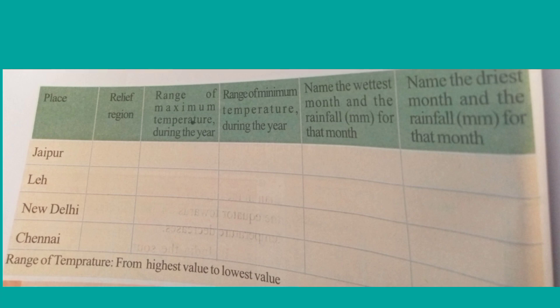Chennai is located on the east coast near the Bay of Bengal. Desert climate influences the climate of Jaipur, while winds from the sea influence the climate of Chennai. One table in the textbook covers the cities Jaipur, Leh, New Delhi, and Chennai, with columns for relief region, temperature range, and rainfall data.